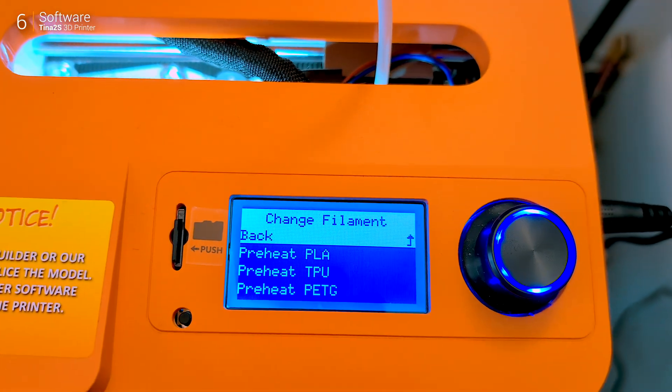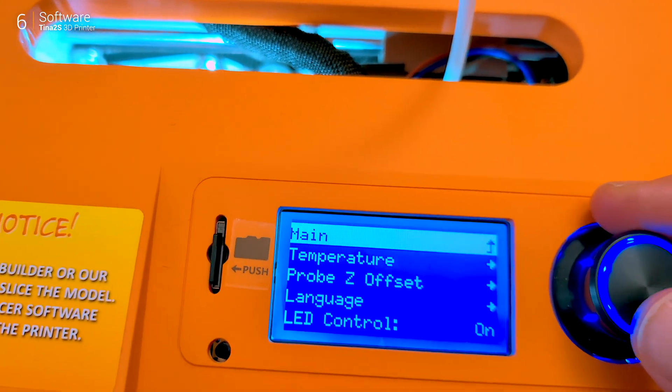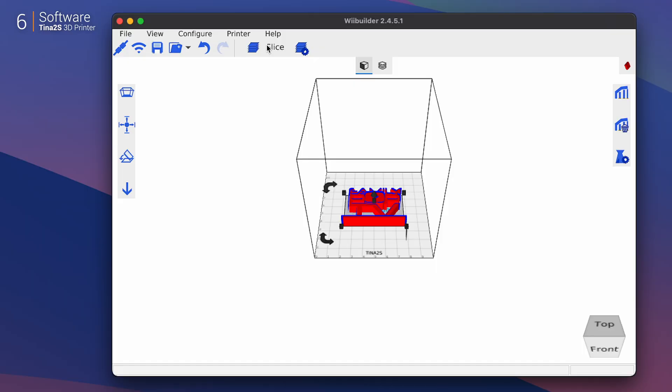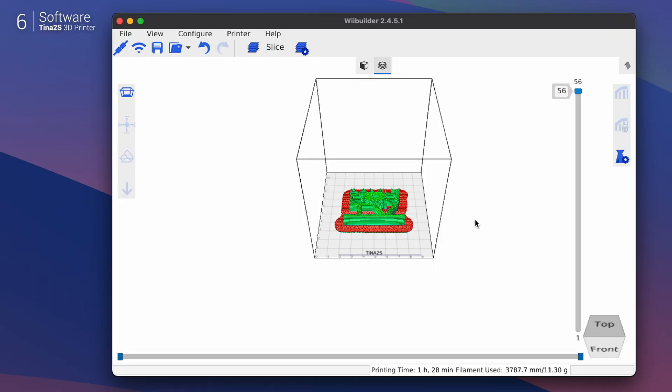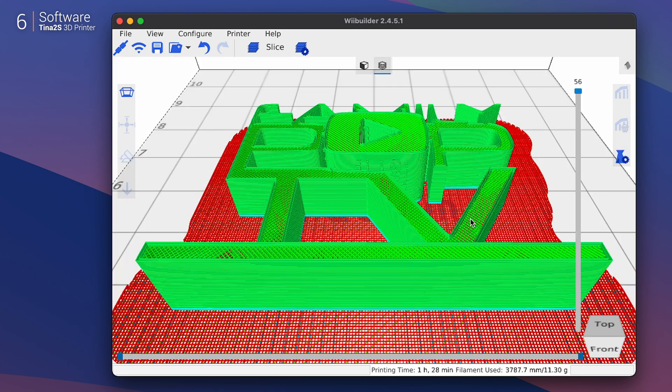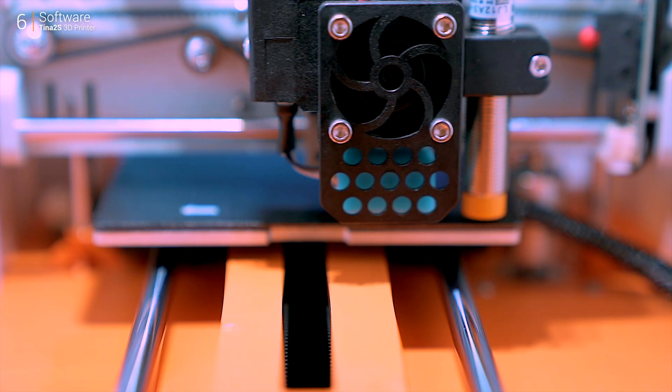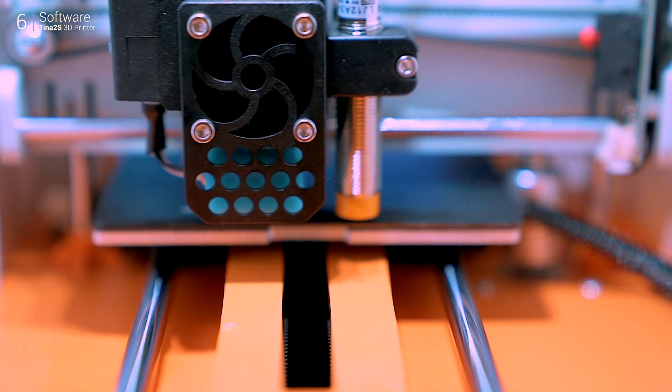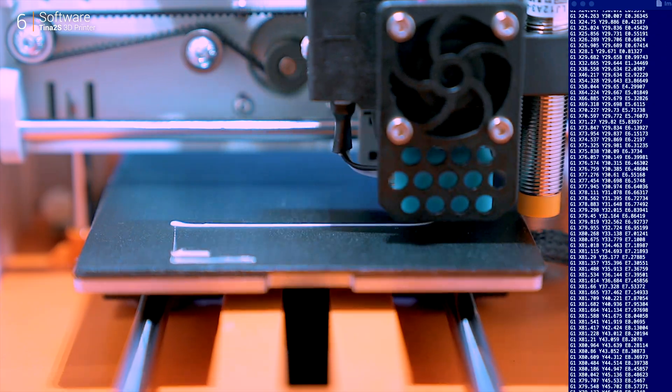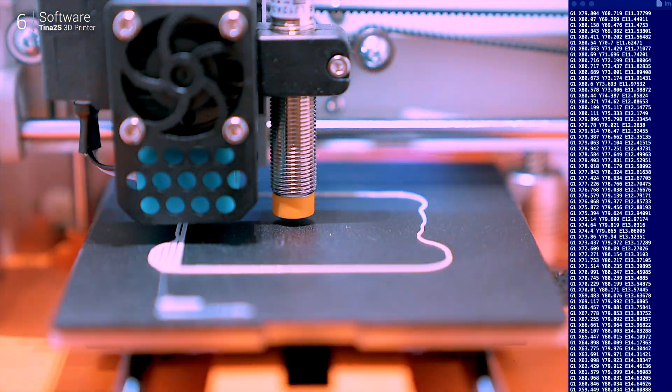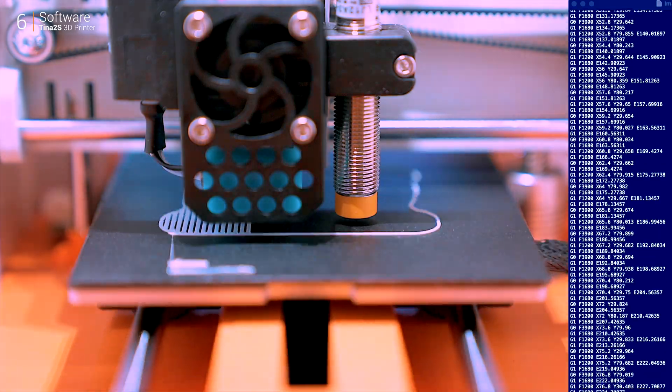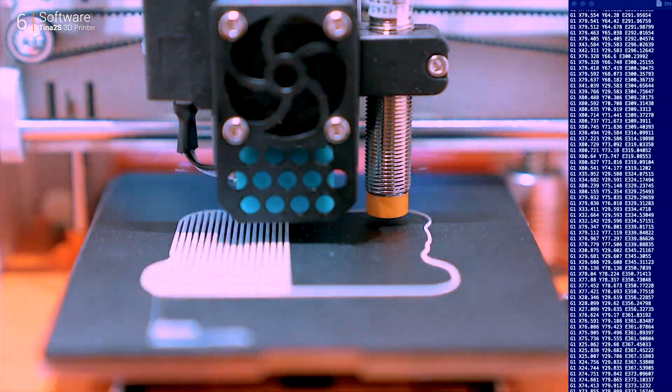Advanced users can tweak options like print speed or infill density, but honestly the defaults work surprisingly well. One neat feature: Webuilder automatically adds a raft to improve bed adhesion, so you don't need to worry about prints detaching mid-process. Once slicing is done, the software generates the G-code and you're ready to go. G-code might sound intimidating, but Webuilder simplifies it. Think of G-code as a script that directs the printer: move here, extrude there, etc.